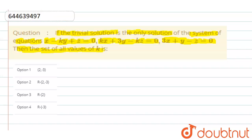Here we can see that the equations are x minus ky plus z equals 0, kx plus 3y minus kz equals 0, and 3x plus y minus z equals 0.